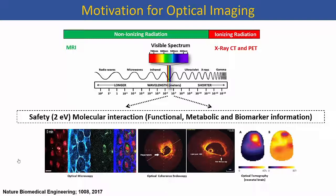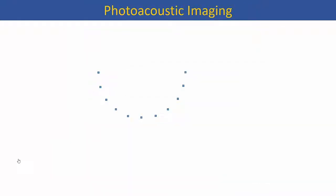Photoacoustic imaging is basically a combination of two different fields: optical imaging and ultrasound imaging. Optical imaging has a lot of advantages over options like MRI, X-ray CT scan, and PET in terms of having very low energy, and yet it picks up functional, metabolic, or biomarker information very relevant for biomedical applications. But it's limited in depth — particularly beyond one millimeter, you lose resolution and the information is not very good.